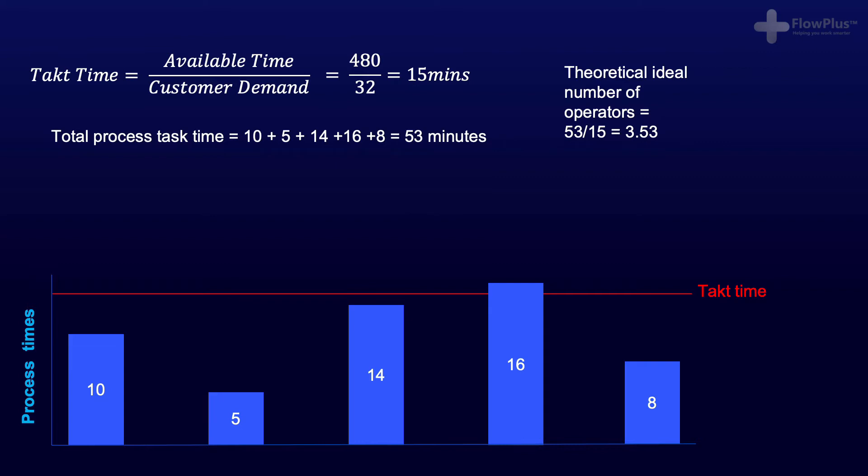For that reason, I would suggest doing another calculation now, where we multiply the takt time by utilization factor, for example, 0.9, which would be 90% utilized. This new value can be called the target cycle time.